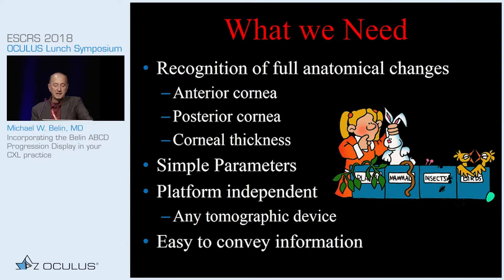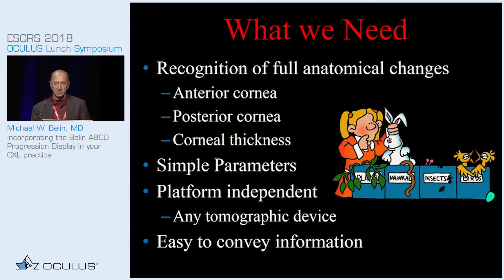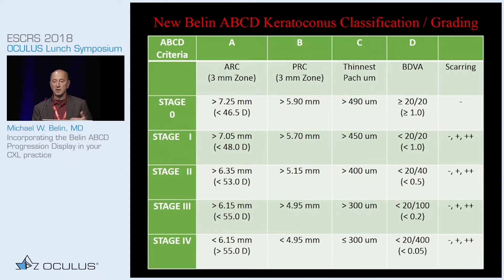What we really need is some way to monitor disease and identify it as early as possible, which means we need a system that looks at all the anatomical layers — not just the anterior surface, but also the posterior surface and corneal thickness. These parameters need to be simple, platform-independent, as long as the system is tomographic so it measures all these layers.